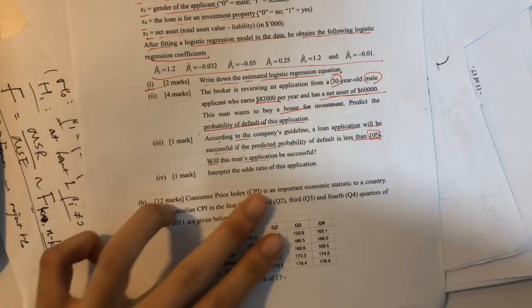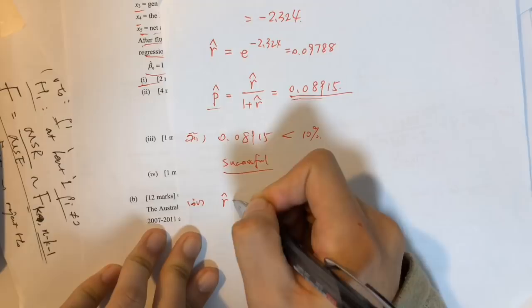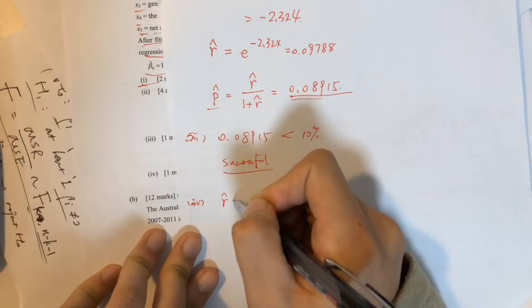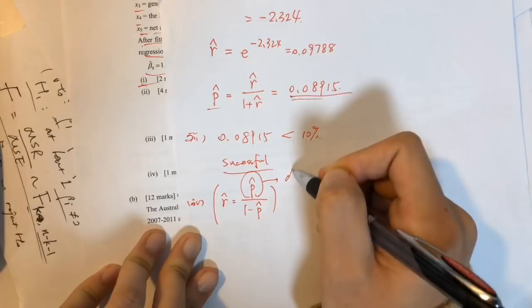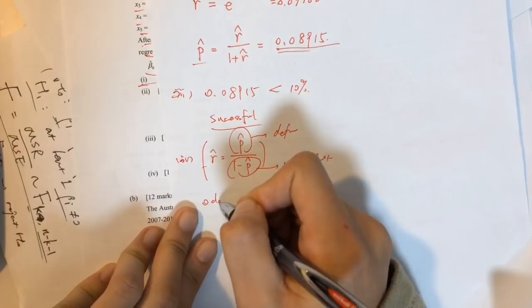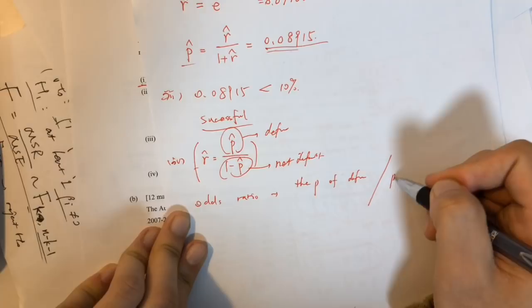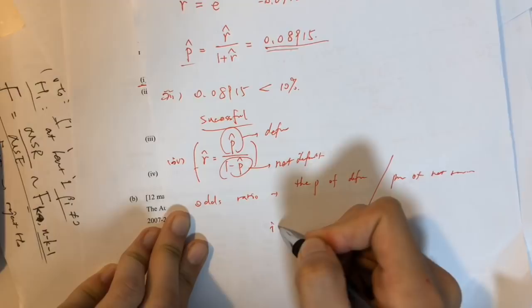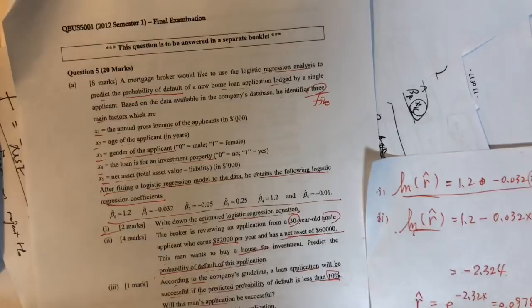Now interpret the odds ratio of this application. We know r̂ = p̂ / (1 − p̂), where p̂ is the probability of default. Therefore the odds ratio can be interpreted as the probability of default divided by the probability of not defaulting, and the result is approximately 0.0978.